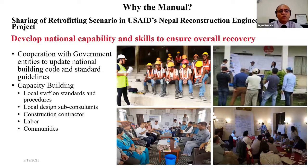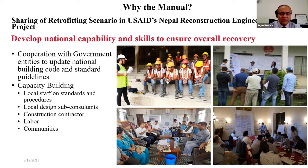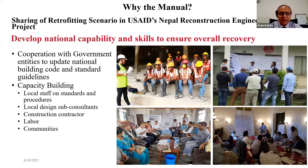Building national capacity is essential. We worked together with government agencies to help them update the national building code and standardise guidelines. Capacity building activities ranged from different levels - at the local level from communities and construction workers. We also worked with local design consultants and had a series of design workshops to incorporate resilient aspects into the designs.